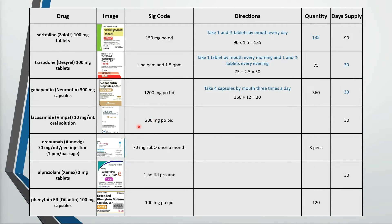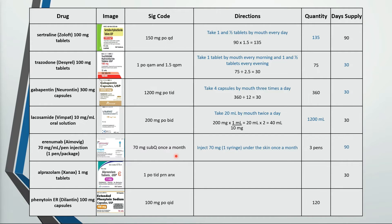This one is a solution and the SIG is given in terms of a strength, so we'll want to convert that to a volume. Set up your calculation so the units cancel and we see that they're taking 20 mL twice a day for 40 mL a day. 40 times 30 is 1,200 mL. Here's an injectable used for migraine prophylaxis: inject 70 mg or one syringe under the skin once a month. Three pens is a three-month supply.